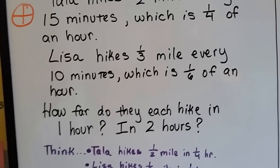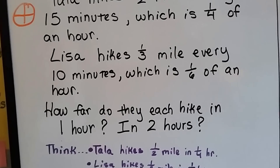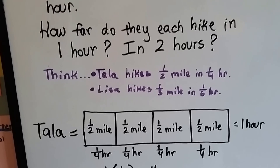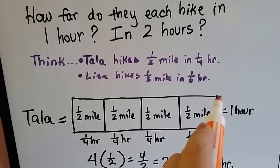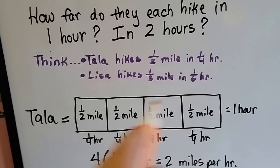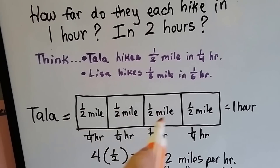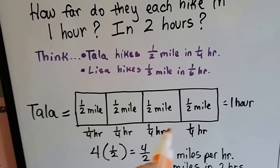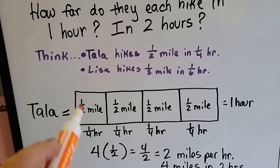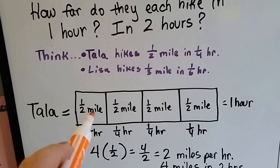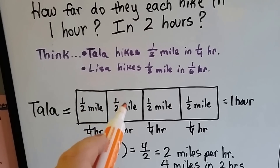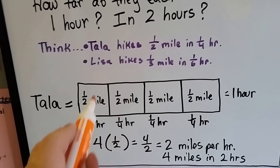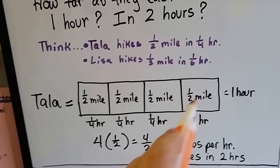So how far do they each hike in one hour and then in two hours? Tala hikes half a mile in one-fourth of an hour. If we have one hour and we break it into four boxes, they're each 15 minutes and each one-fourth of an hour. We know she walks a half mile in one-fourth hour, so we put a half and a half and a half and a half — that's one whole mile, then two whole miles.